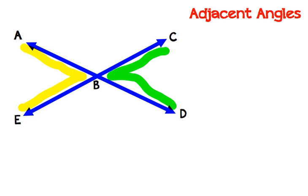We can look here and I'm noticing that angle CBA shares a whole side here, a whole ray with angle EBA. So we can say that angle EBA is adjacent to angle CBA.